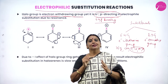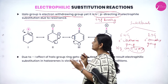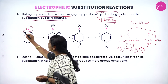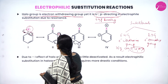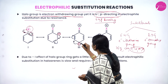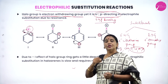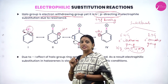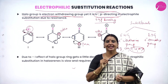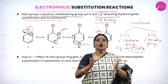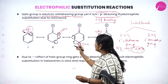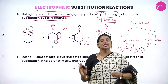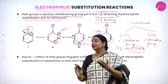Why are electron withdrawing groups ortho and para directing in electrophilic substitution? During resonance, if X is a halogen atom, it has three lone pairs of electrons. One lone pair shifts to the ring, the pi bond shifts to carbon, and that carbon acquires a negative charge. This negative charge appears at the ortho and para positions during resonance. The meta position does not acquire any negative charge.